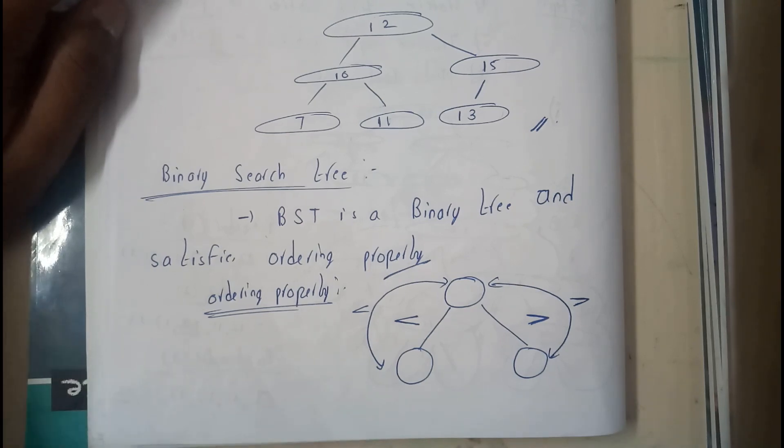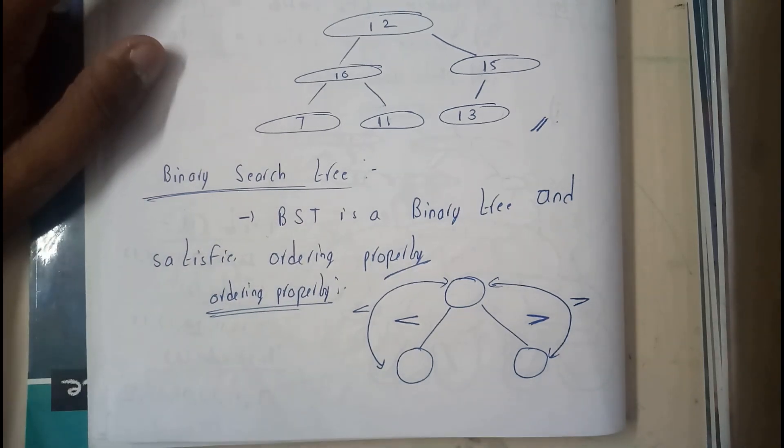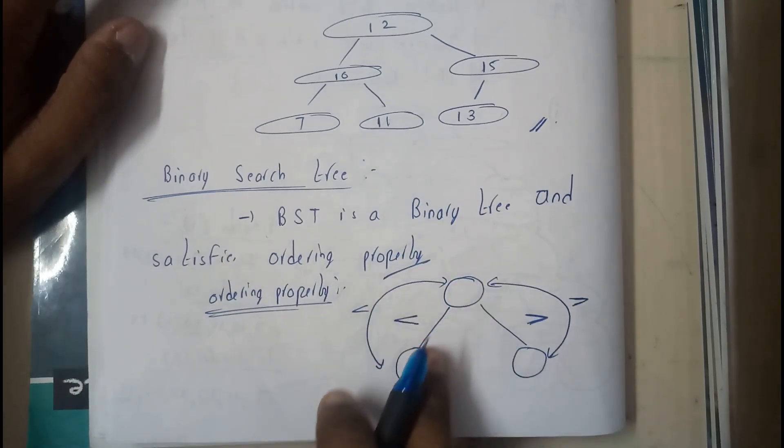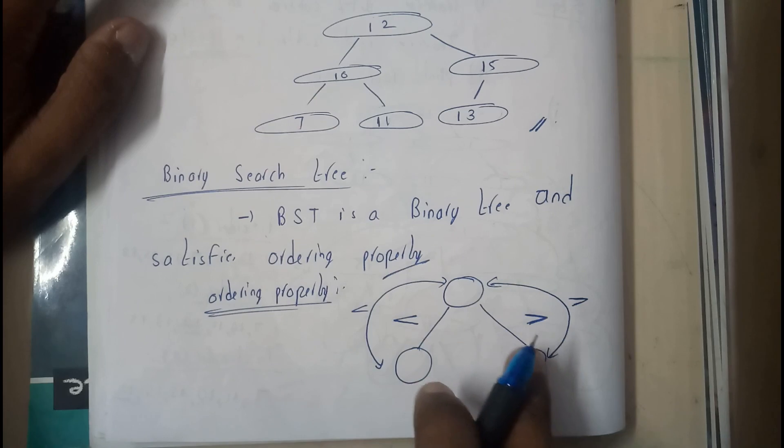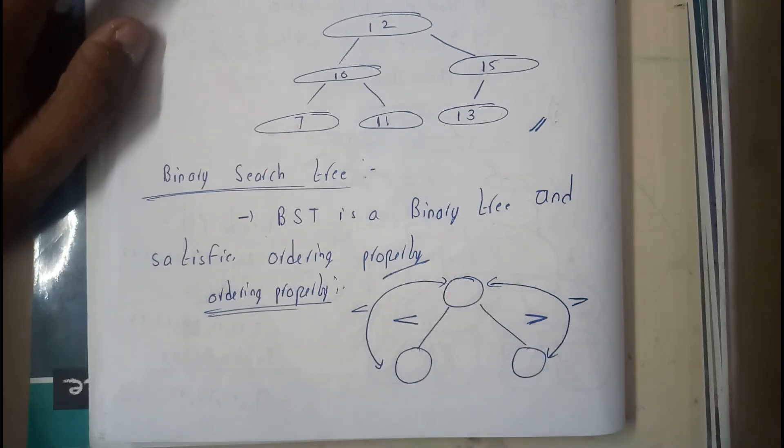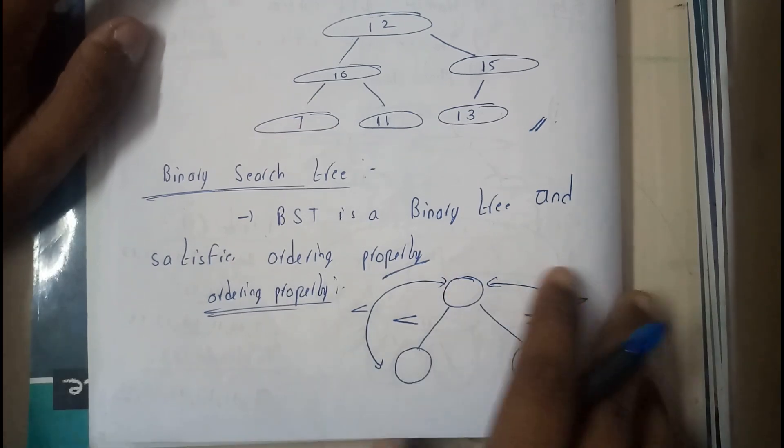So basically, ordering property is nothing but always the root's left node should be less than the root, and the root's right node should be greater than the root. Got it? So I hope you got a small idea.